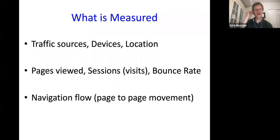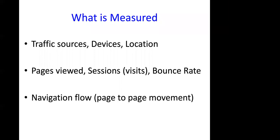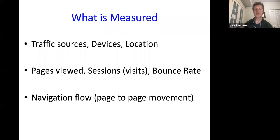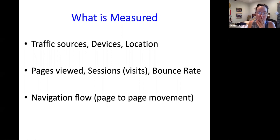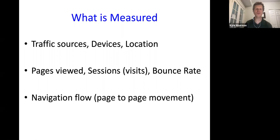By default, things that show up in your data include traffic sources — how did people find you? Organic search, paid search, the devices they're on, their physical location whether it's a country, state, or city level. You also get basic metrics like pages viewed and sessions — another name for visits — and how people move around your site. All measurements occur when that code fires on a page, so each time your webpage reloads, Google is measuring data.